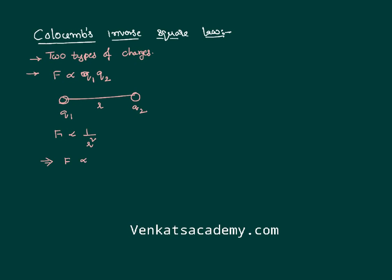Combining these two we can say F is directly proportional to Q1 Q2 by R square. We have to eliminate the proportionality based on experimental results. That proportionality constant value is 1 by 4 pi epsilon naught Q1 Q2 by R square. So here we are using a new term called epsilon naught.